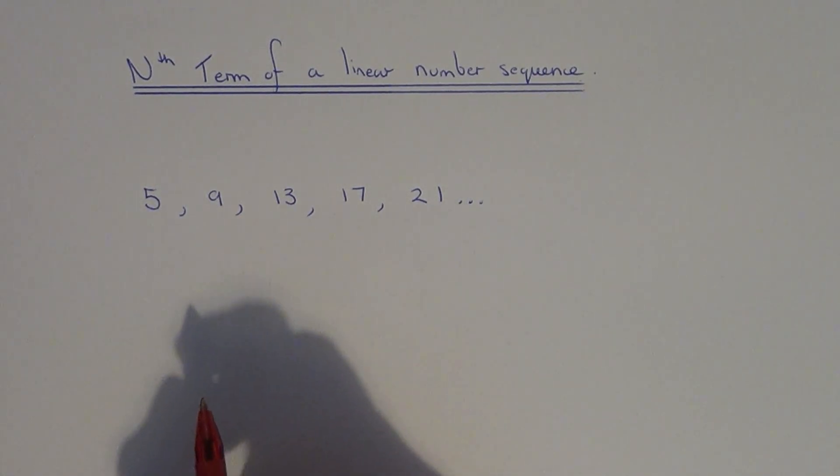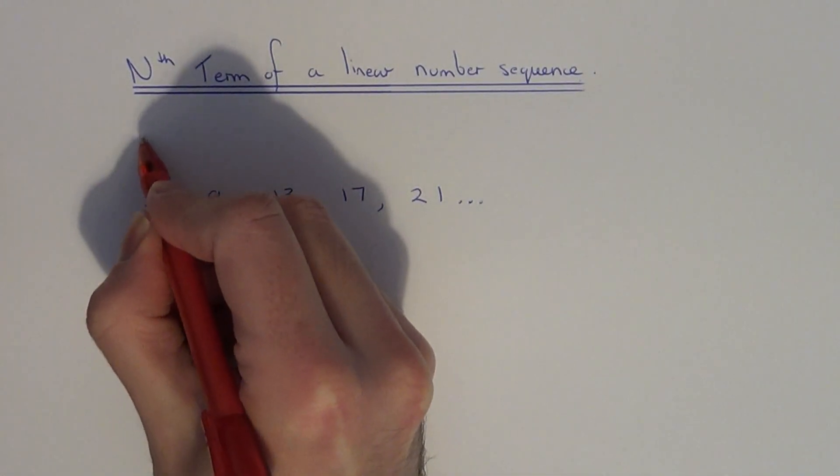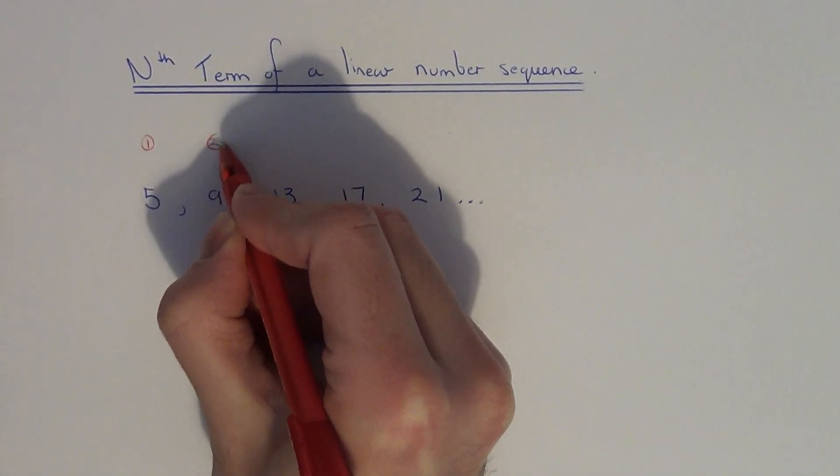So to work out the nth term, first you'll need to write the numbers 1 to 5 above the top of your number sequence.